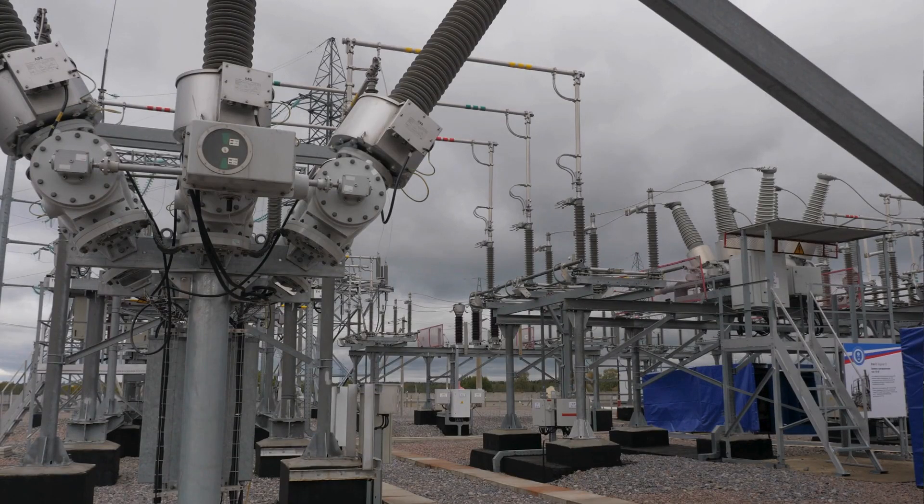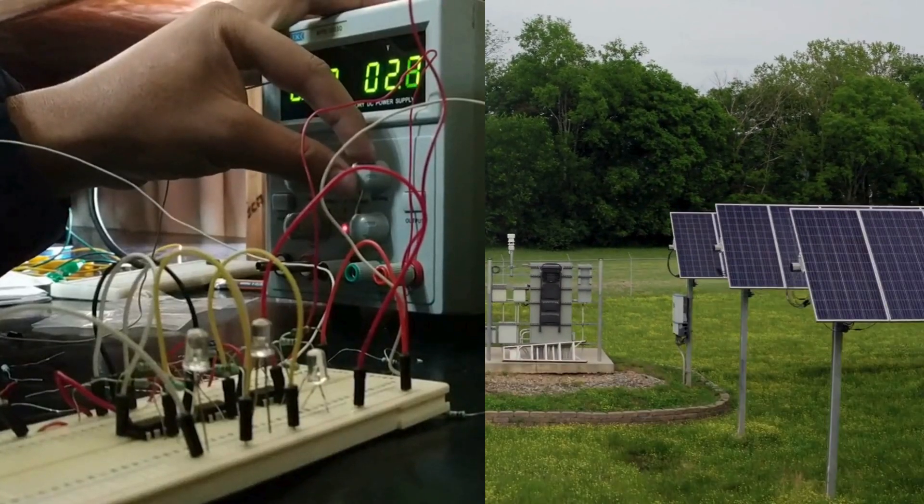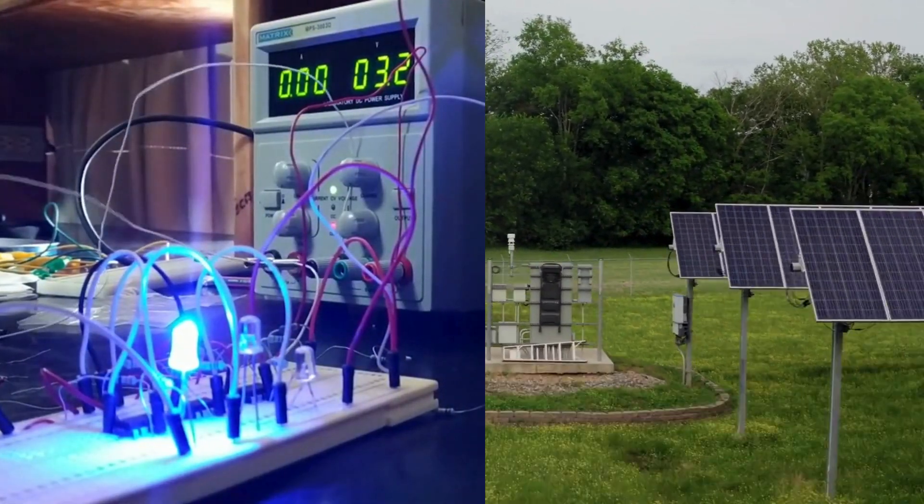AC is generated by AC generators, or you can say alternators, and is the standard for transmitting electricity. On the other hand, DC is generated by batteries, by solar panels, or even DC generators.